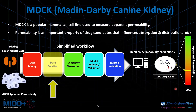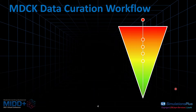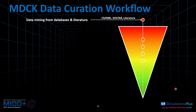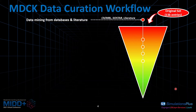The major focus of this presentation is going to be on the data curation part of the pipeline. For the MDCK data curation workflow, the very first step is data mining. We were extracting data from ChEMBL, GoStar, and literature. The original dataset contained about 13,000 compounds — that's a whole lot of data.